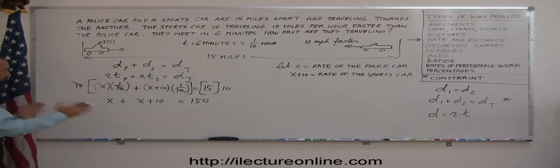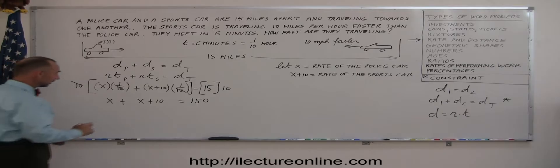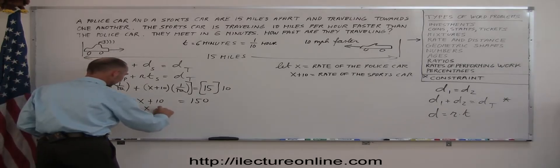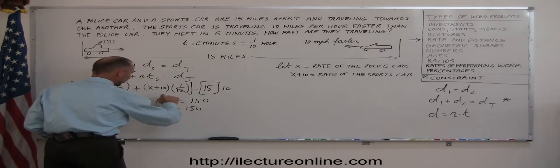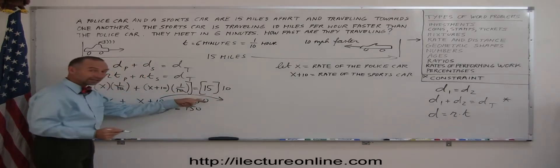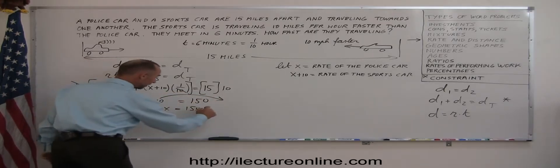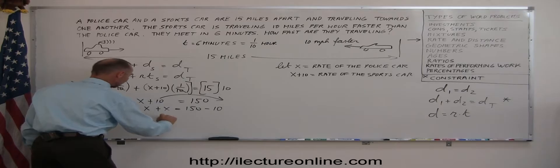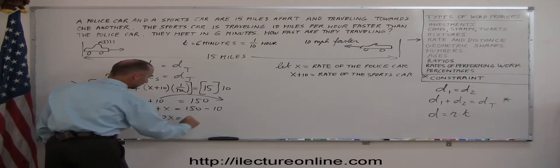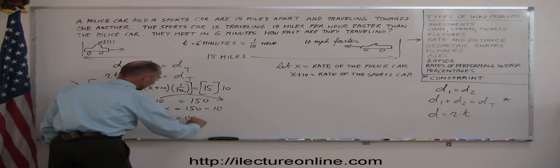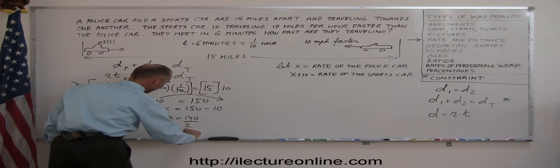Now we'll go ahead and put all the x's on one side, all the numbers on the other side. So on the left side, I have x plus x. The only thing I have to move is a 10. When the 10 moves to the other side across the equal sign, it becomes a minus 10. x plus x is 2x, equals 150 minus 10, which is 140. Divide both sides by 2, and I get x equals 70.